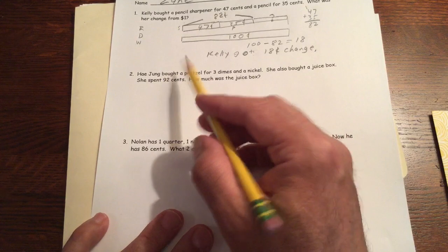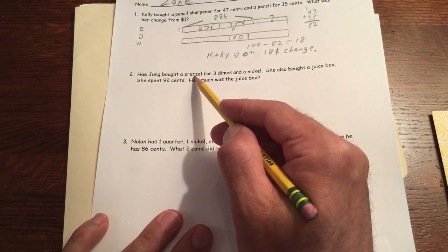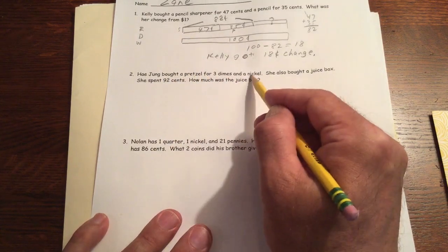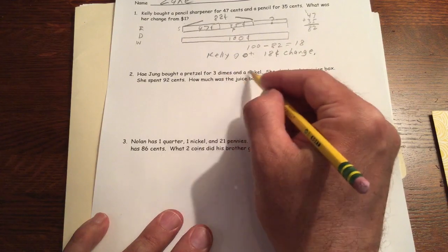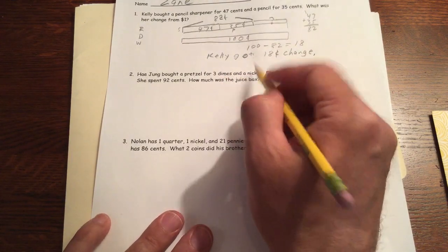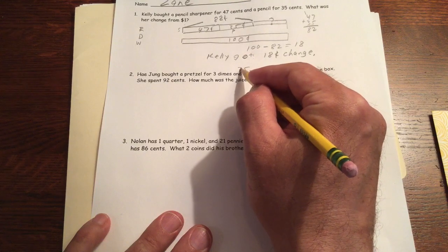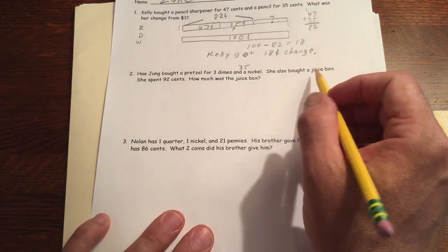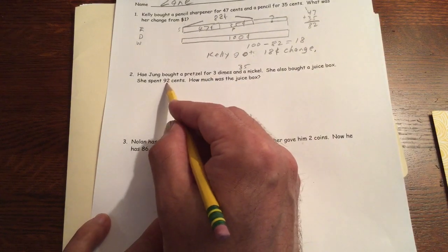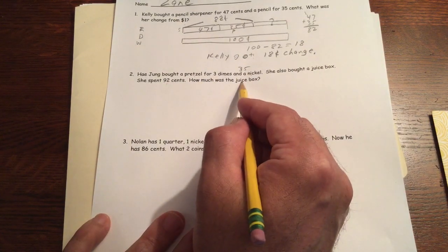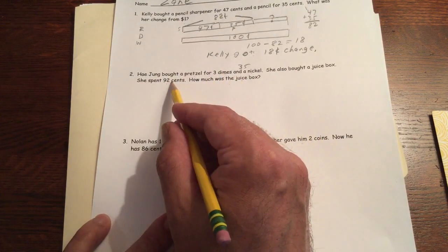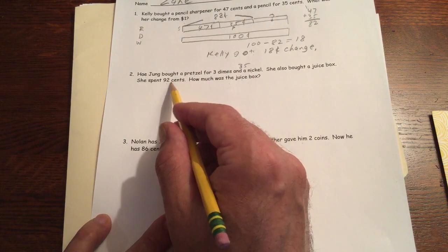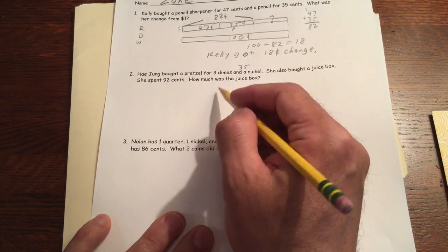Number two. Hay Jung bought a pretzel for three dimes and a nickel. Three dimes and a nickel, that's 35, so that's 35. I'm just gonna write that down right there. She also bought a juice box. She spent 92 cents. How much was the juice box?